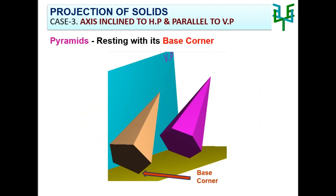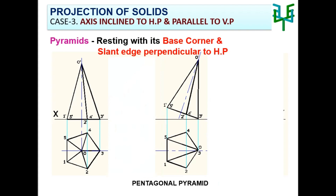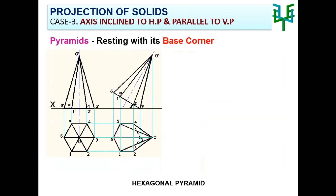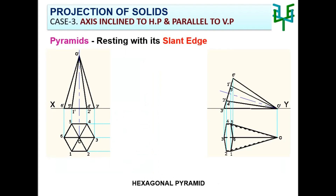The next case is a pyramid resting with its base corner, with the main condition of axis inclined to HP and parallel to VP. By resting with its base corner, the pyramid's slant edge can be perpendicular to HP. Another possibility is that the pyramid may lie on the ground with a slant edge. For example, a hexagonal pyramid resting on the ground with its base corner — axis inclined to HP and parallel to VP — resting with base corner and slant edge perpendicular to HP, or laying on the ground with its slant edge.